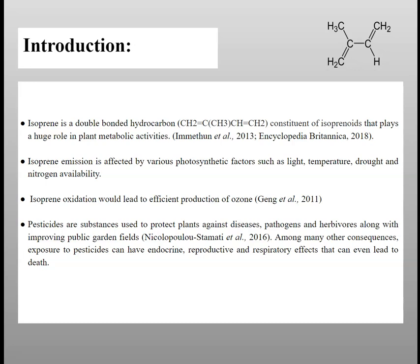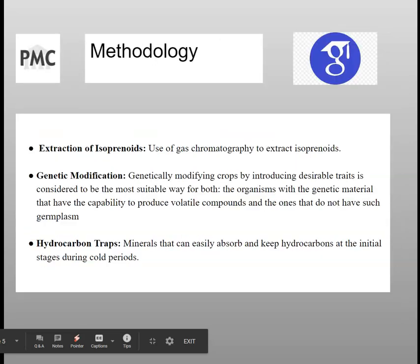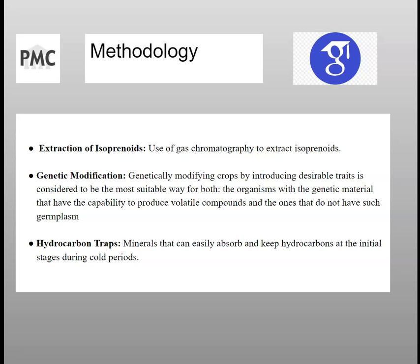Pesticides, as we all know, are used to protect plants against diseases, pathogens, and herbivores, but they have more harms than benefits — they are harmful for animals, insects, and humans in general. For our literature research, we used Google Scholar and PMC. The three steps that we identified were: the extraction of isoprene, genetic modification, and hydrogen traps.